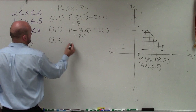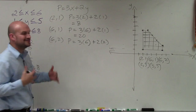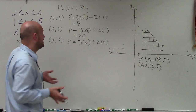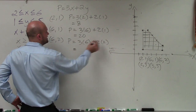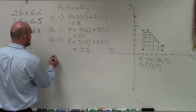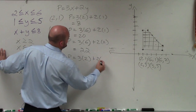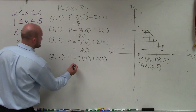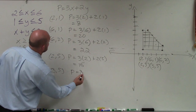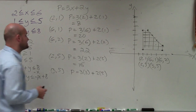Now for (6, 2): p equals 3 times 6 plus 2 times 2. You can start doing a lot of this math in your head, or at least identify two or three points that are possible maximum solutions. 3 times 6 is 18 plus 2 times 2 is 4, so that's 22 — so far that is our maximum. Then for (2, 5): p equals 3 times 2 plus 2 times 5, which is 6 plus 10, equals 16. And for (3, 5): p equals 3 times 3 plus 2 times 5, which is 9 plus 10, equals 19.